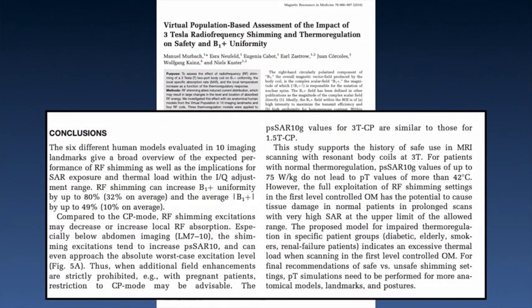Multi-transmit may also be referred to as B1 or RF shimming. And aside from shading, it has been shown that using multi-transmit versus circularly polarized can result in differences in local SAR. Therefore, concerns have been raised as to the unknown effects of the SAR differences between the multi-channel multi-transmit and circularly polarized transmit, particularly in pregnant patients.